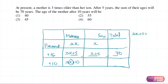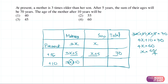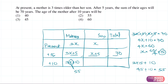3x plus 5 plus x plus 5 equals 70, which simplifies to 4x plus 10 equals 70, so 4x equals 60 and x equals 15. Now we substitute 15 into the expression for the mother's age after 10 years: 3 times 15 plus 10 equals 45 plus 10, which is 55. So 55 is the age of the mother after 10 years, which matches option 2.